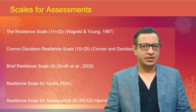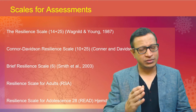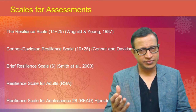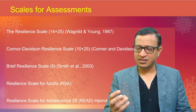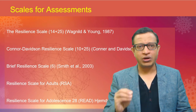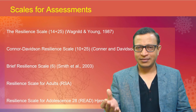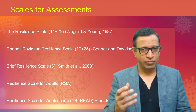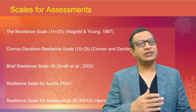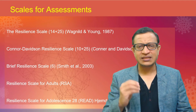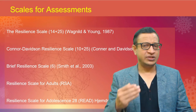Coming to the scales for assessing resilience, there are many scales available. The Resilience Scale has two versions: a brief 14-item scale and a 25-item scale, measuring both internal core and external resilience factors. The Connor-Davidson Resilience Scale has a 10-item and 25-item version. The Brief Resilience Scale is only six items and looks only at core resilience. There are also resilience scales for adults, adolescents, and academics.